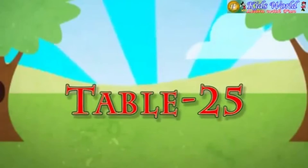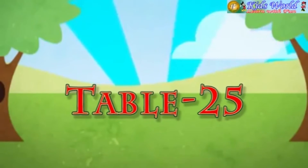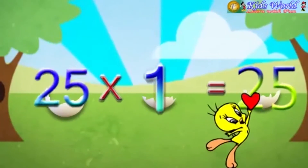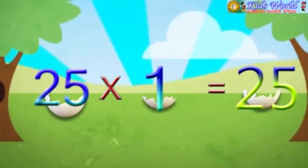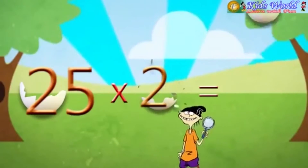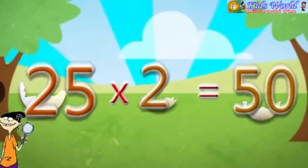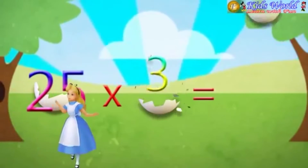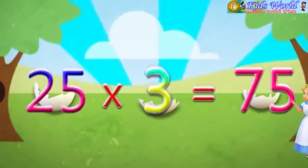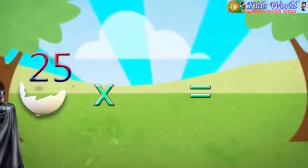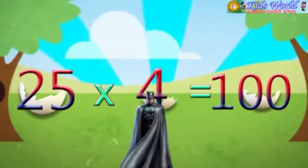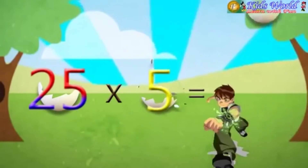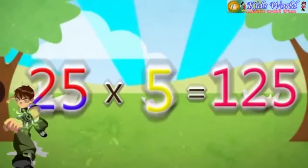Table 25. 25 into 1 is equal to 25. 25 into 2 is equal to 50. 25 into 3 is equal to 75. 25 into 4 is equal to 100. 25 into 5 is equal to 125.